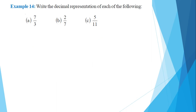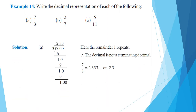Now let's see how we write the decimal representation of each of the following: 7 by 3, 2 by 7, 5 by 11. For 7 by 3, here the remainder 1 repeats, so the decimal does not terminate.